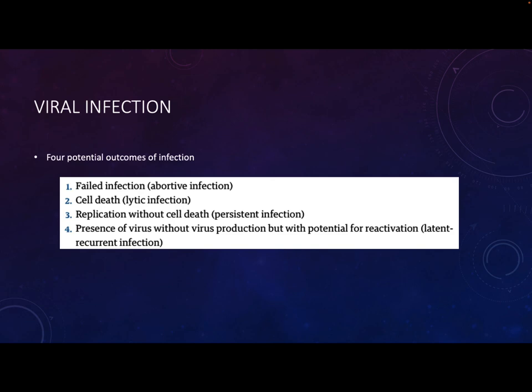There are four potential outcomes of infection at the cellular level: a failed or abortive infection where the cell could not be infected; a lytic infection where the cell dies; a persistent infection where the virus replicates without causing cell death; and a latent recurrent infection where the virus is present inside the cell but not replicating, though it might later. Latent recurrent infection is really common with our herpes viruses.